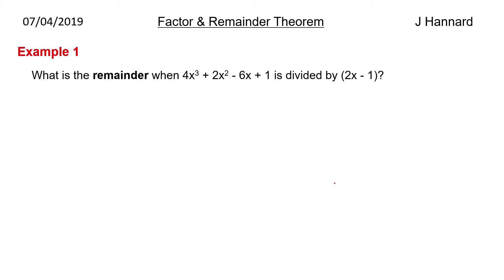Fantastic stuff. So example 1. What is the remainder when 4x cubed plus 2x squared minus 6x plus 1 is divided by 2x minus 1? So just put x equals a half through the cubic. The thing we're doing here is making that bracket 0. So 2x minus 1 is 0 when x is a half. So that is what we're doing. So we put a half through and we cube a half and we square a half and we times it by 4 and 2 respectively. Take off 6 times a half plus 1. So you get a half plus a half minus 3 plus 1. So the remainder is minus 1.